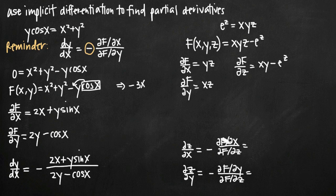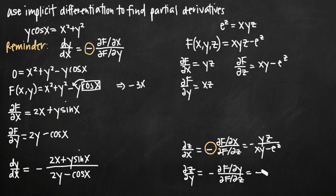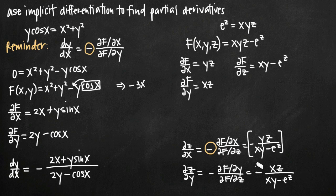Now we plug these into our formulas. Don't forget the negative sign out front — it's super important just like before. The partial derivative of z with respect to x is negative yz divided by (xy minus e to the z). The partial derivative of z with respect to y is negative xz divided by (xy minus e to the z). These two equations together are our final answer for the three-variable problem.